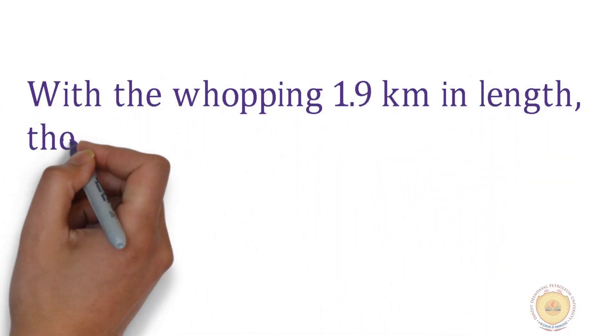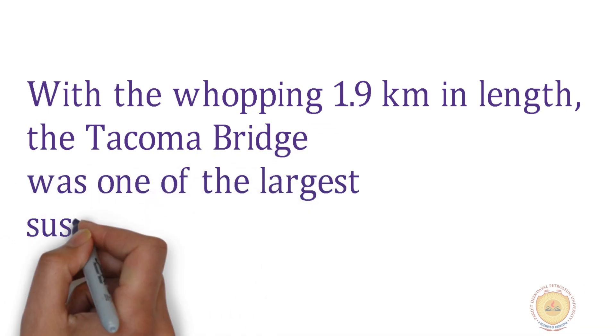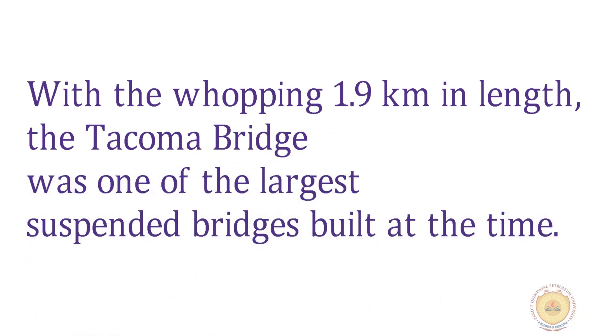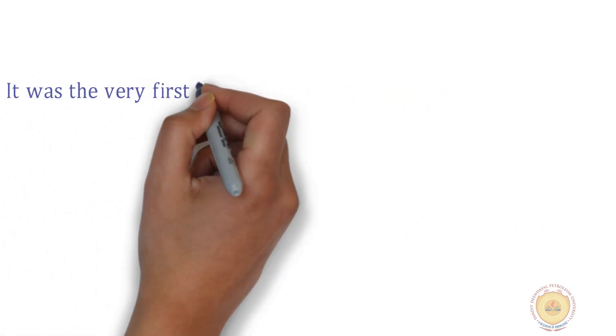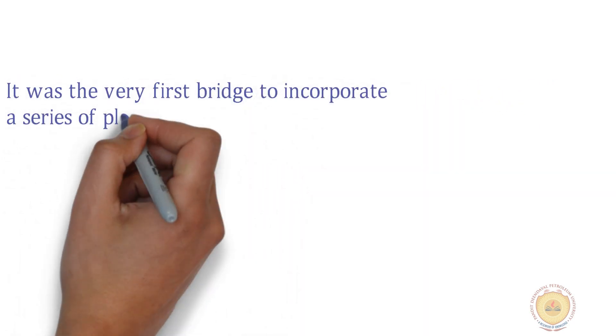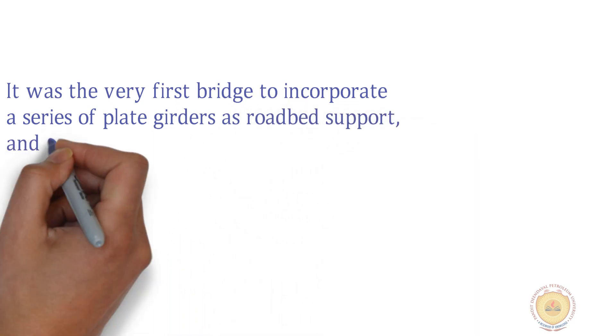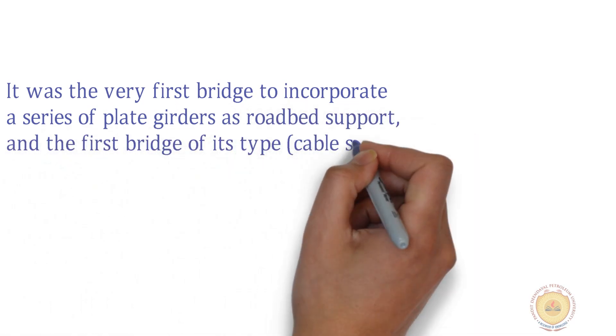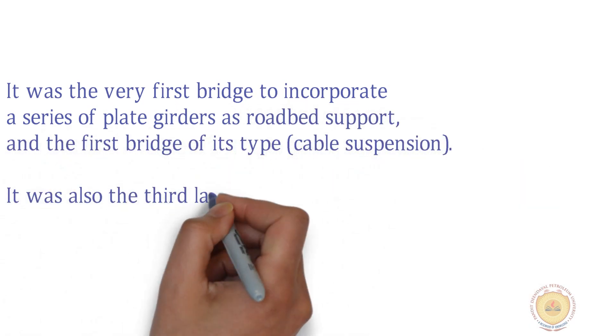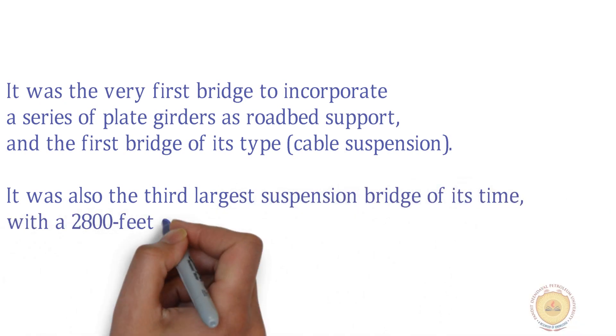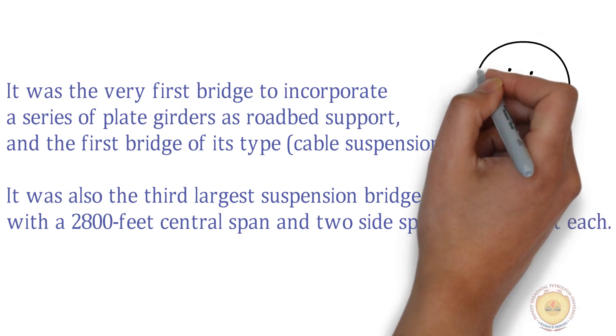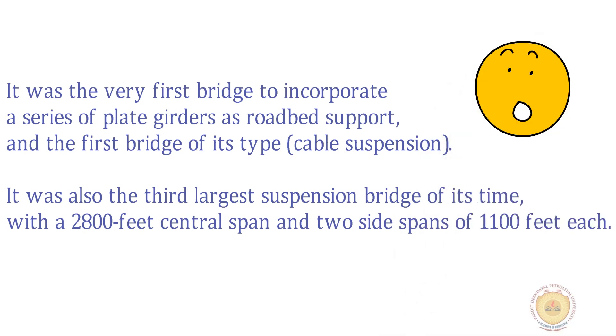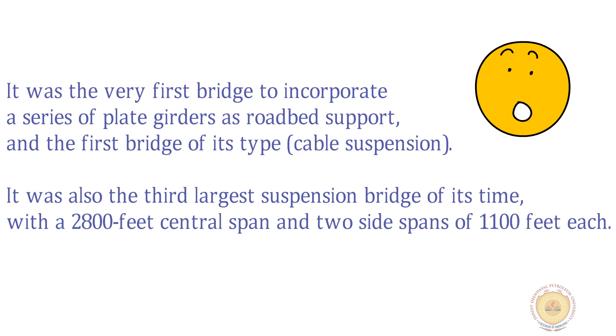With the whopping 1.9 km in length, the Tacoma bridge was one of the largest suspended bridges built at the time. It was the very first bridge to incorporate a series of plate girders as roadbed support and the first bridge of its type cable suspension. It was also the third largest suspension bridge of its time, with a 2800 feet central span and two side spans of 1100 feet each.